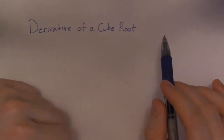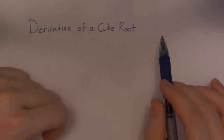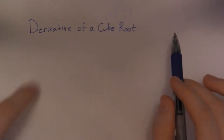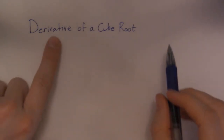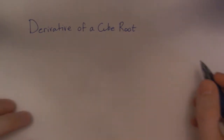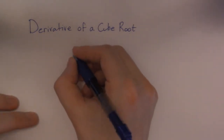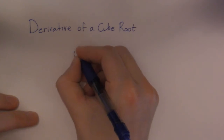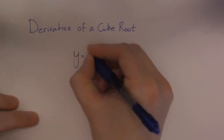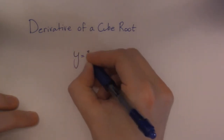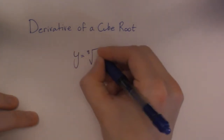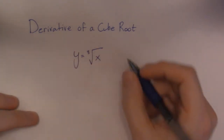Hey guys, Mr. B here again making another sick awesome math video. This one is going to be on finding the derivative of a cube root. So if we have a cube root, let's call it y is equal to the cube root of x.